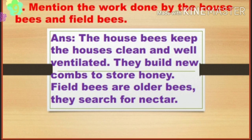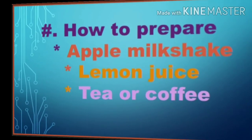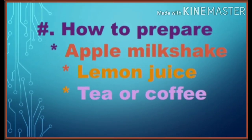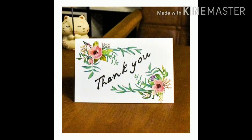Question nine: Mention the work done by house bees and field bees. The house bees keep the houses clean and well-ventilated, and they build new combs to store honey. Field bees are older bees — they search for nectar. Children, write down all the questions and answers in your notebook. For project work, divide the class into three groups. Each group should take one recipe — apple milkshake, lemon juice, or tea or coffee — and write the ingredients and preparation method on A4 size paper to submit to your class teacher.